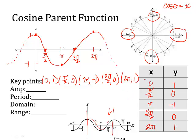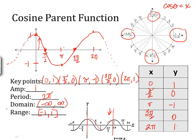These are the five key points for cosine. Write them down and keep them handy so you can get them memorized. Our amplitude, again, is the distance from the midline — it goes up one unit and down one unit. The period: how long does it take for the full cycle to complete before it starts repeating? It goes to two pi. Domain: negative infinity to positive infinity. Range: negative one to positive one, both included.